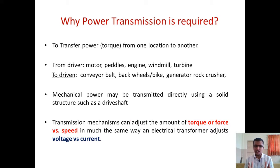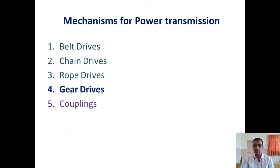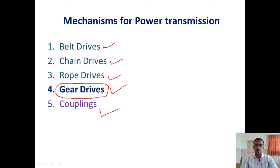Mechanical transmission mechanisms such as gear drives and belt drives try to adjust torque and speed — lesser torque gives more speed and less speed gives more torque — in a similar way to how an electric transformer adjusts voltage and current. We will explore torque versus speed characteristics in detail when we study gear trains. The main mechanisms for power transmission are belt drives, chain drives, rope drives, gear drives, and couplings. Our primary focus will be on gear drives.